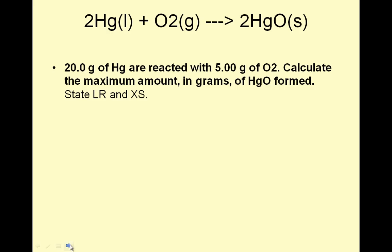So, let's do some examples. 20 grams of mercury, which it figures, mercury I do not know the molar mass of, so hopefully my phone can tell me, are reacted with 5 grams of O2. Calculate the maximum amount in grams of mercury oxide formed. Let's see if I have a periodic table in my phone. No, I don't. What kind of chemistry teacher am I? I think it's 209.